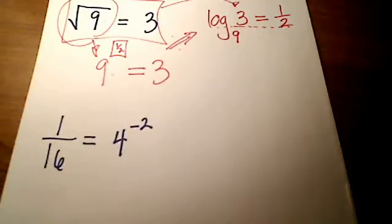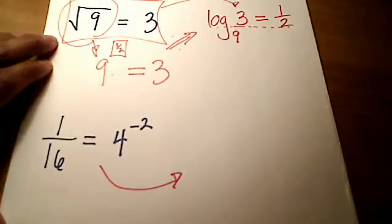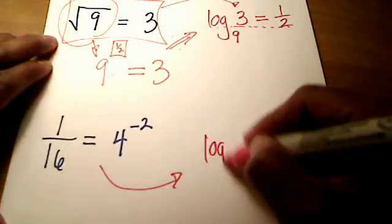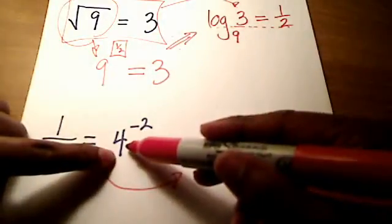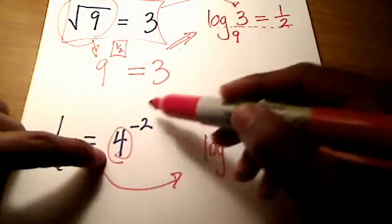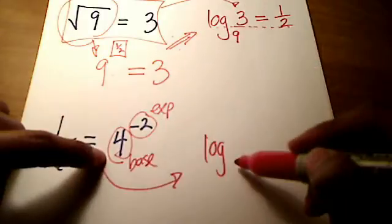All right, so again, we're going to go straight into its equivalent logarithmic form. So we start with the word log. What is the base in this case? OK, this time the base is on the other side of the equal sign. This right here is my base. This guy here is my exponent. So I'm going to go subscript 4.